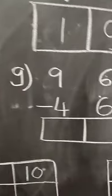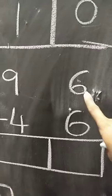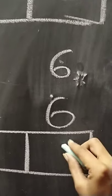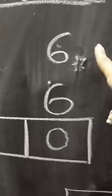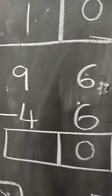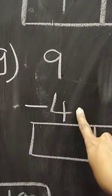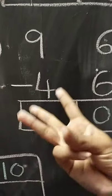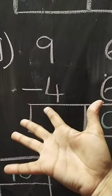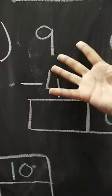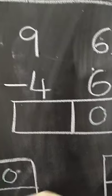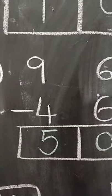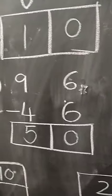Next is G. Here again we have 6 minus 6. Both are same digits, so the answer will be 0. Then 9 minus 4 — we count till 9: 4, 5, 6, 7, 8 and 9. So, 9 minus 4 will be 5. The answer is 50.